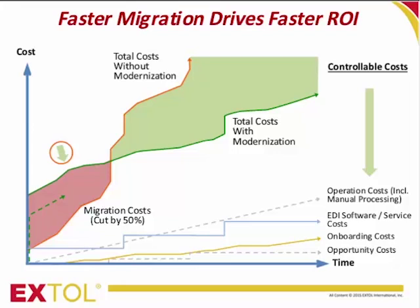By halving the length of the migration cost line, the point at which the total cost curve bends moves to the left. The cost of migration itself is halved, and the cost curves cross sooner than they did before, so the cost benefits of the modern EDI replacement solution accrue faster. Cost savings aren't usually the main motivation for replacing an EDI system — more often decisions are driven by the need for new capabilities — but the role that rapid migration plays in hastening new benefits is not as well appreciated as it should be.